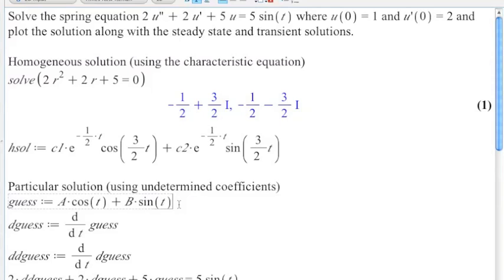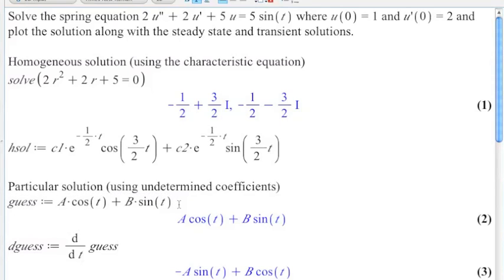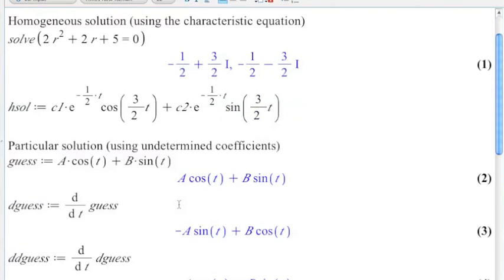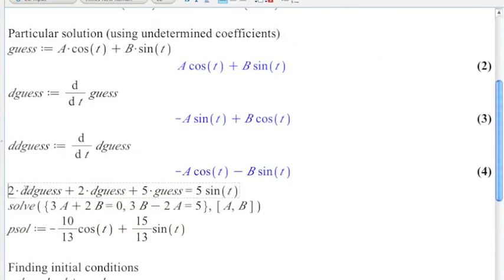Our guess is going to be a multiple of cosine t plus a multiple of sine t. Let's take the derivative of that. Let's take the derivative of that. And now all I'm doing is I'm plugging twice the second derivative plus 2 times the first derivative plus 5 times the original function, and that should be 5 sine of t. And all I'm doing here is I'm following the differential equation.